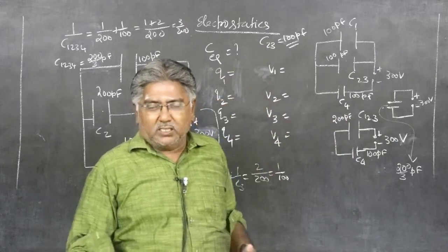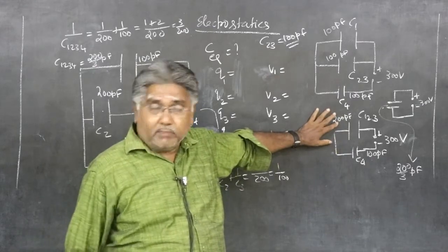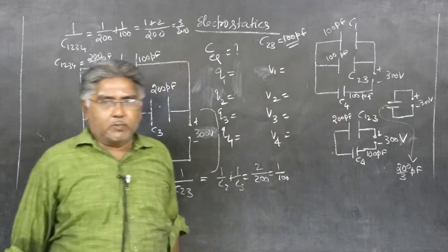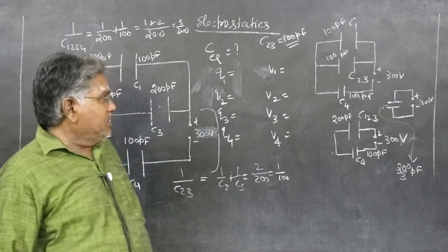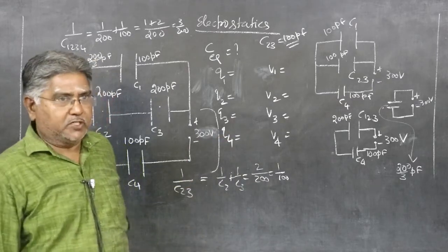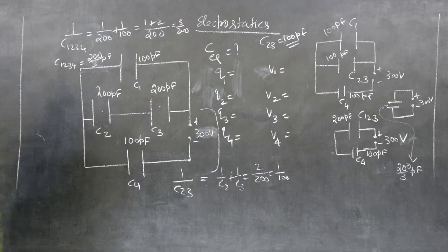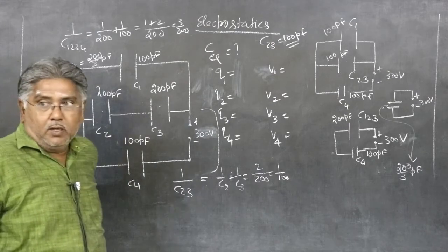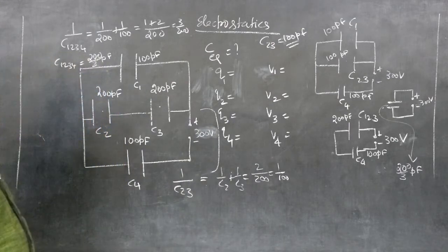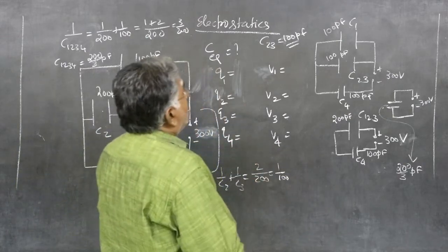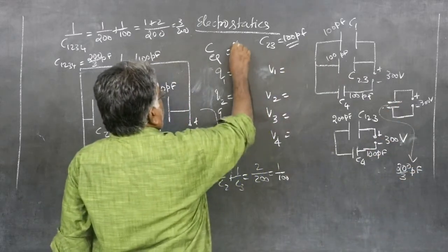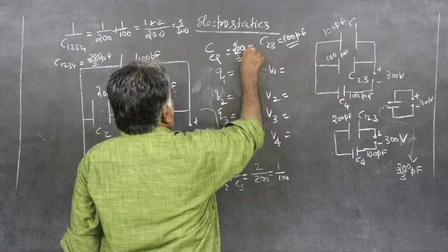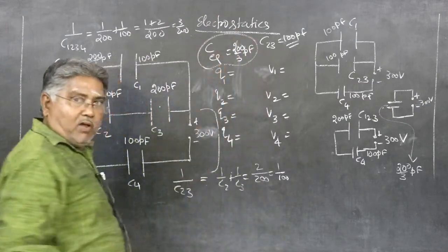The effective capacitance is C_equivalent = 200/3 pF. That is the answer for the first part. Now we should find the charge in each and PD across each. You proceed from the last circuit backward. The capacitance is 200/3 pF, and using q = CV, the charge drawn from the battery is C_effective × V = (200/3) × 10⁻¹² × 300 = 2 × 10⁻⁸ coulomb.